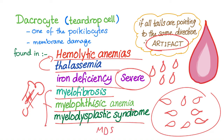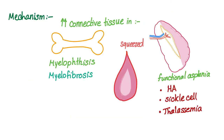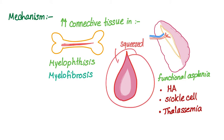If the tails are pointing to the same direction — artifact. Pointing to different directions — it's a disease. So what's the mechanism? Basically, you have a red blood cell getting squeezed in a bone marrow or a spleen with increased connective tissue. Increased connective tissue in the bone marrow leads the red blood cell to get squeezed while exiting. Same thing with the spleen — if the spleen is infiltrated with connective tissue, the blood cell gets squeezed into a teardrop cell. So here we have problems in the bone marrow such as myelophthysis and myelofibrosis, also MDS.